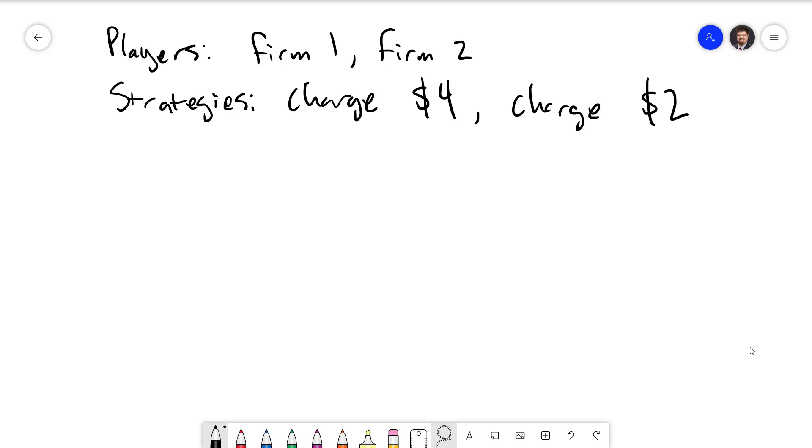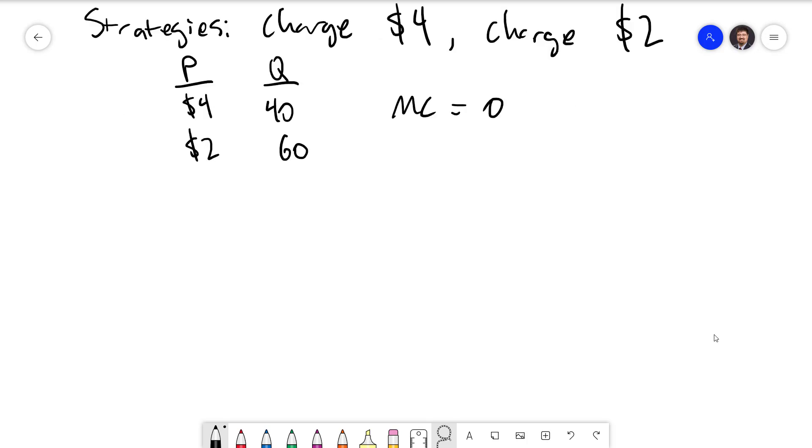The demand function is, if the price is $4 then the quantity is 40 and if the price is $2 then the quantity is 60. For simplicity we will assume that marginal cost equals zero.